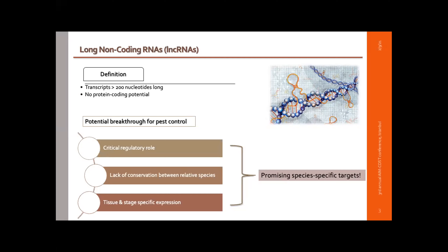Non-coding RNAs can provoke a breakthrough in pest control approaches. They are not conserved even among closely related species, but they have tissue- and state-specific expression, and they have been connected to critical regulatory processes in various organisms. So we try to investigate their role in mosquito biology in order to use them as species-specific targets.